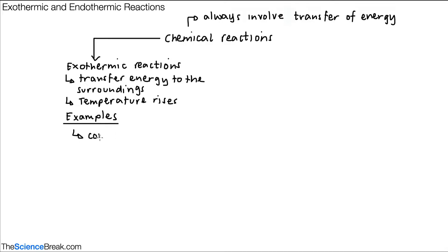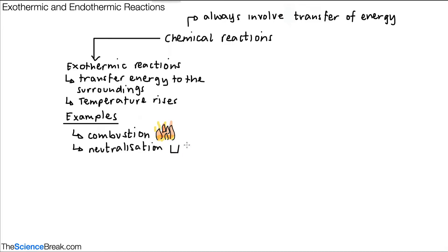Examples include combustion, which we've looked at before. This just means burning, so if something is burning, this is a chemical reaction and it's exothermic. We also have neutralization reactions — when we have an alkali and an acid that react together, we get neutralization, which is an example of an exothermic reaction.